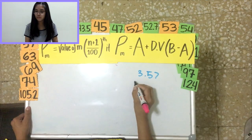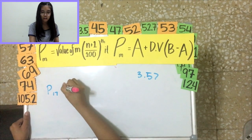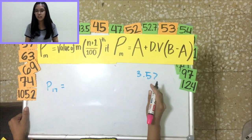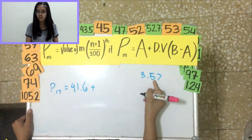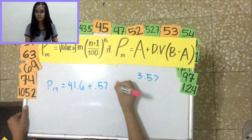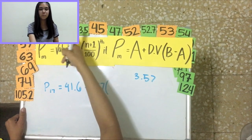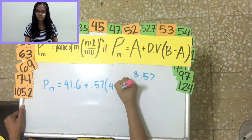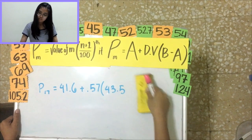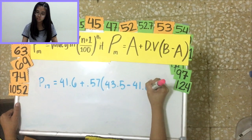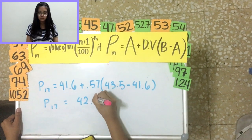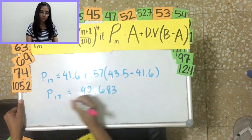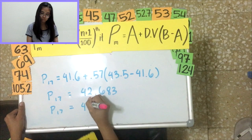So now for our second formula. Percentile of 17. Our A, since the answer to earlier was 3.57, our A will be 41.6. It's the first number now. 41.6 plus the decimal value, which was 0.57. Our B will be the next number to 41.6, which is 43.5. So the answer to this will be 42.6. Simplify that, it will be 42.7.